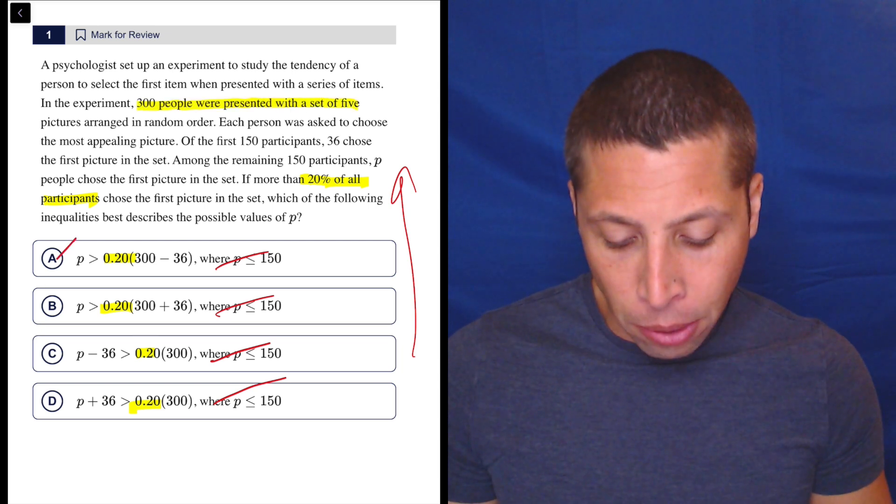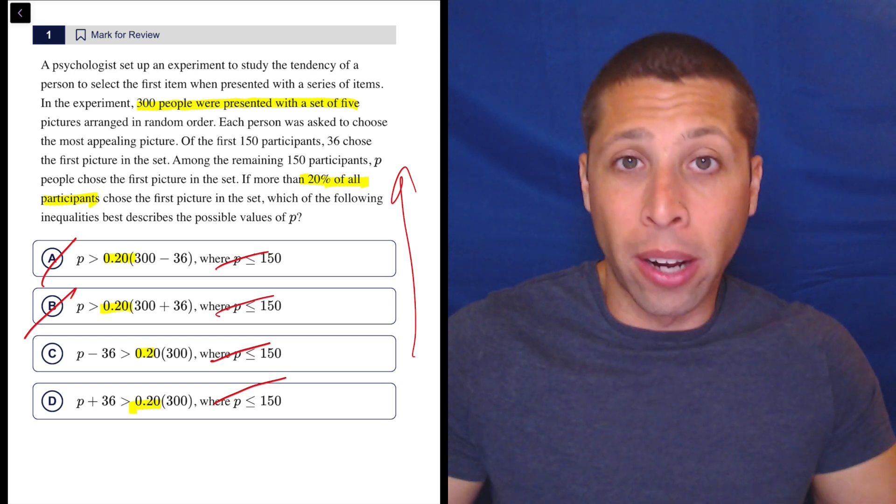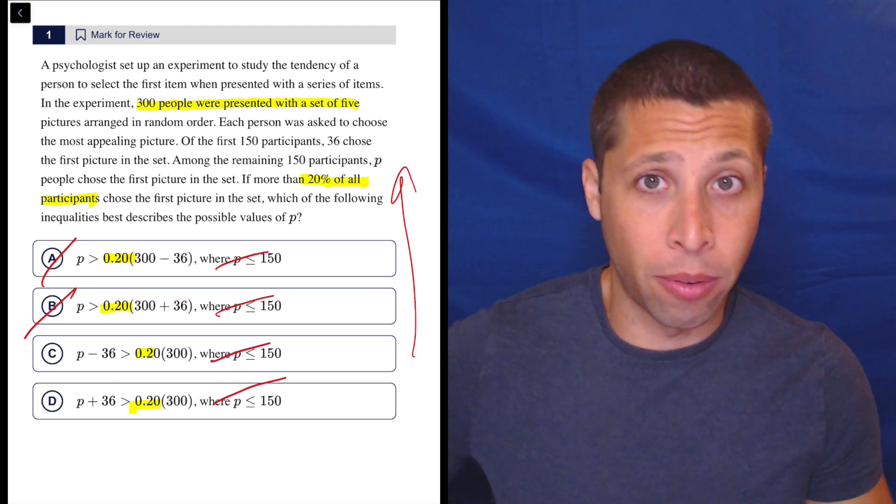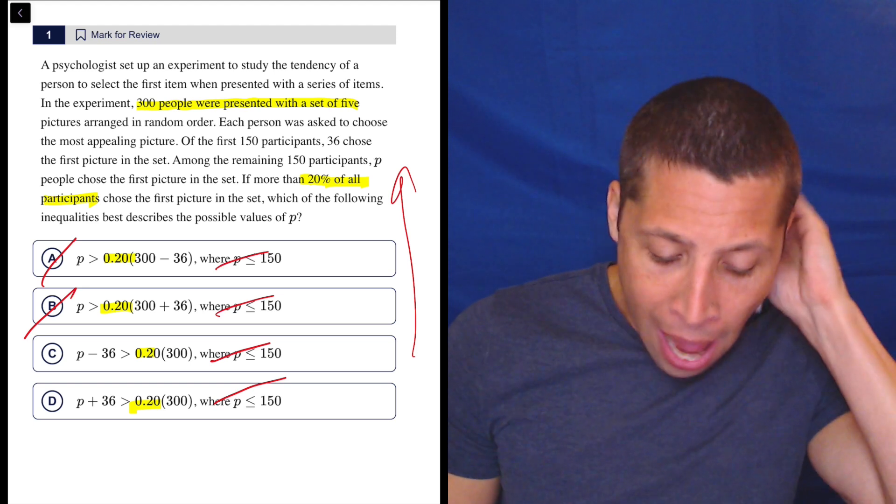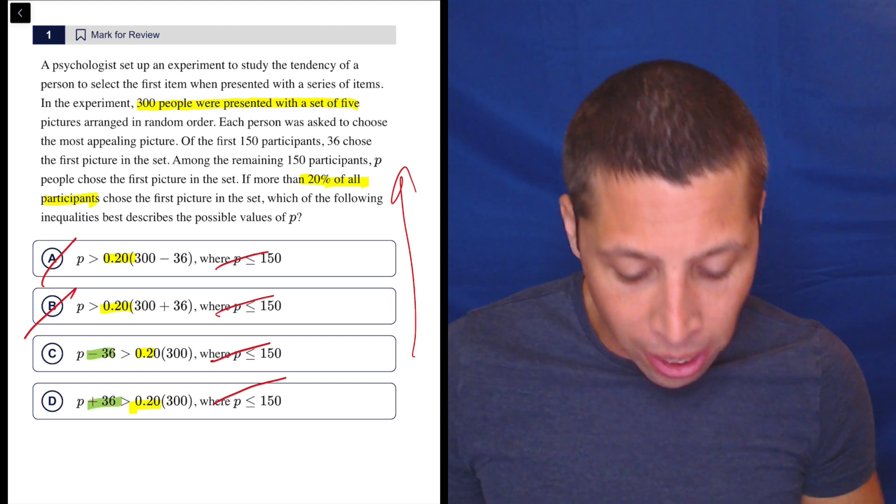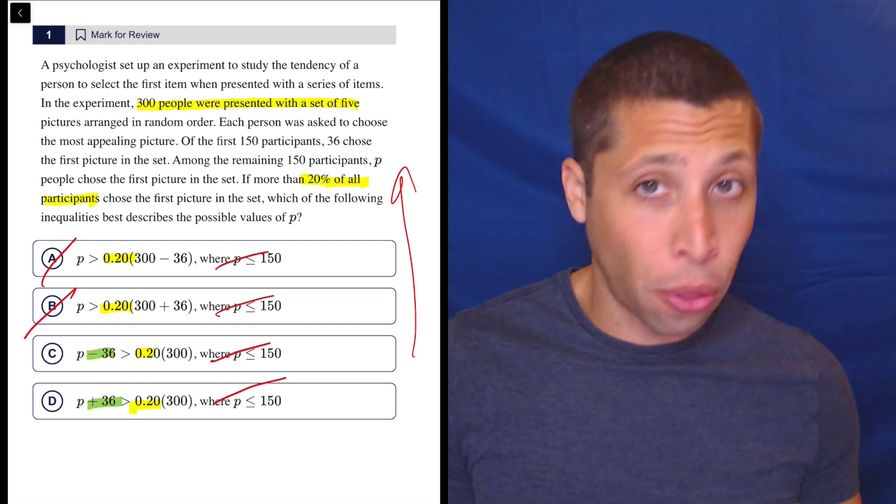So just like that, I'm pretty sure it's not A or B. It feels like I need to do 20% of everyone, of 300. Why would I add another 36 to 300? Why would I subtract 36 from 300, right? If everyone in the experiment is 300, let's stick to that. Now I have a different choice, right? I have the choice of do I subtract 36 or add 36 to P.